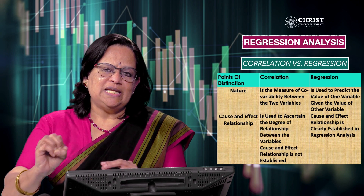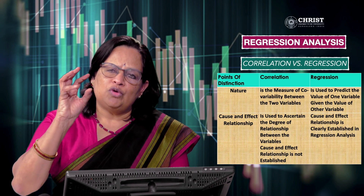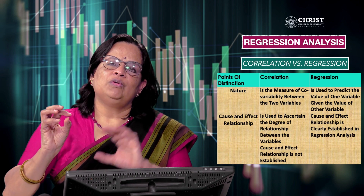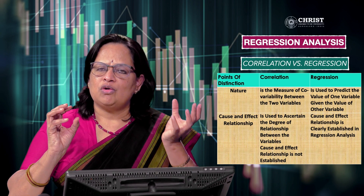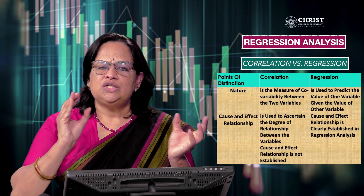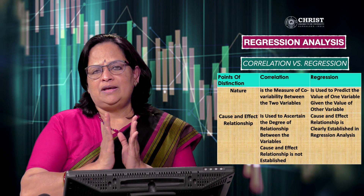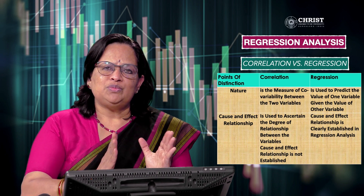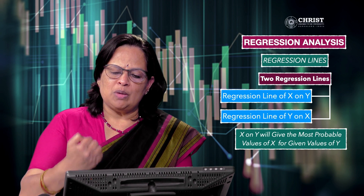For sales and advertisement, you can analyze what should be the sales figure and what should be the advertisement budget. This we can predict only through regression. Now, if you want to compute regression, there are two regression lines. One is called the regression line x on y, and the second is the regression line y on x. Regression line x on y gives the most probable values of x for the given values of y.